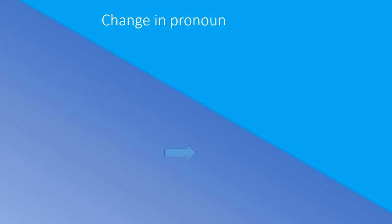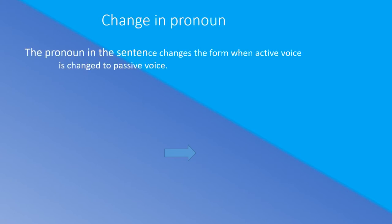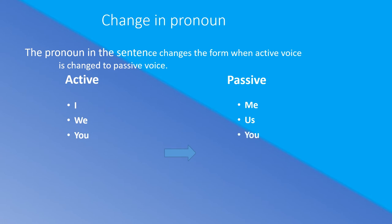When active voice is changed to passive voice, the pronoun in the sentence changes its form. In active voice: 'I' becomes 'me' in passive voice; 'we' becomes 'us'; 'you' remains 'you'; 'he' becomes 'him'; 'she' becomes 'her'; 'it' remains 'it'; and 'they' becomes 'them.' This is the change in form of the pronoun.